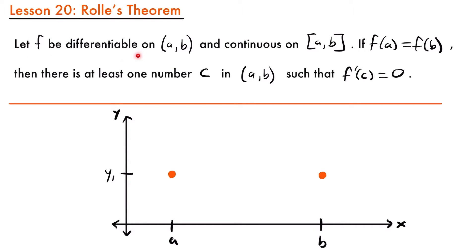Let the function f be differentiable on the open interval from a to b, and continuous on the closed interval from a to b. And then if the value of a on the function is equal to the value of b on the function, then there is at least one number c on that open interval such that the derivative at that point c is equal to zero. So what this is saying is that if we have two points on a graph that have two different x values but they have the same y value, there's going to be at least one value of x between these two points where the slope is zero.